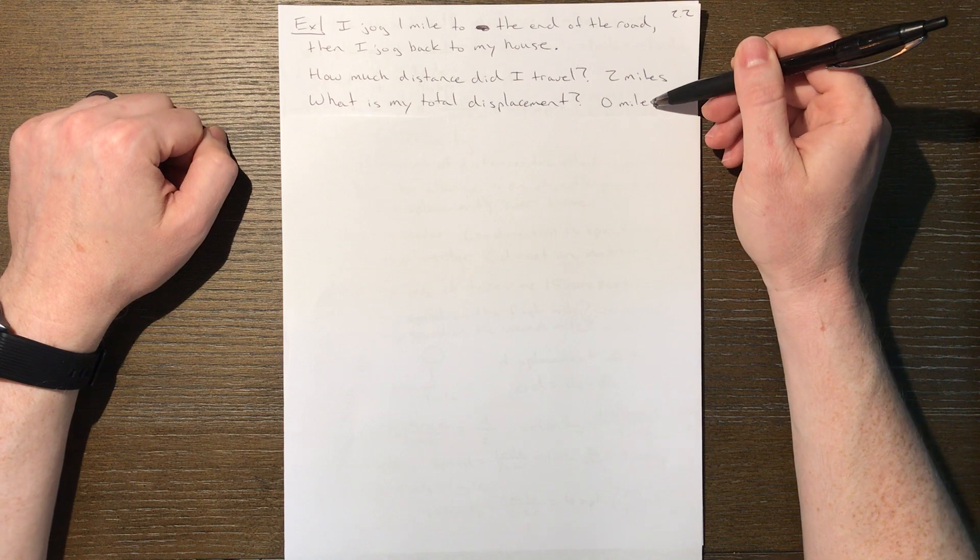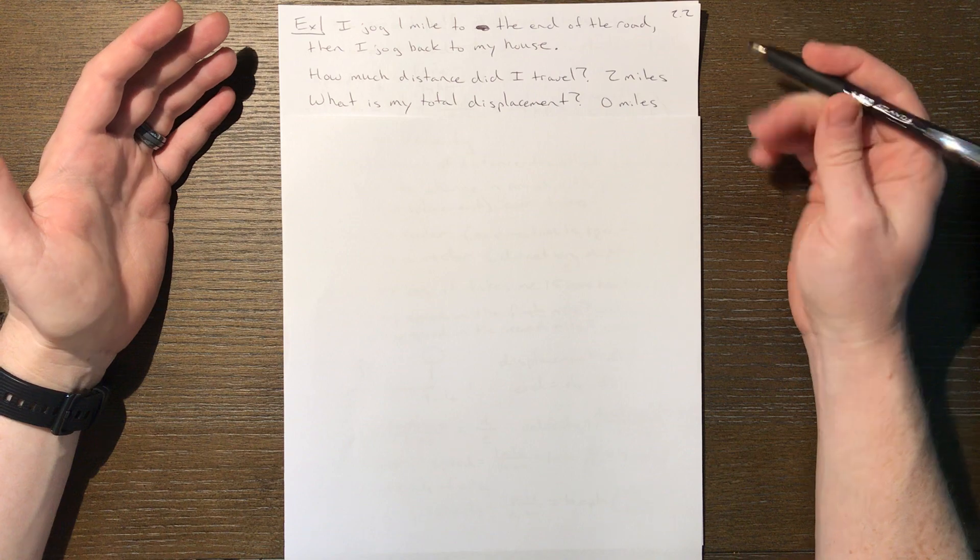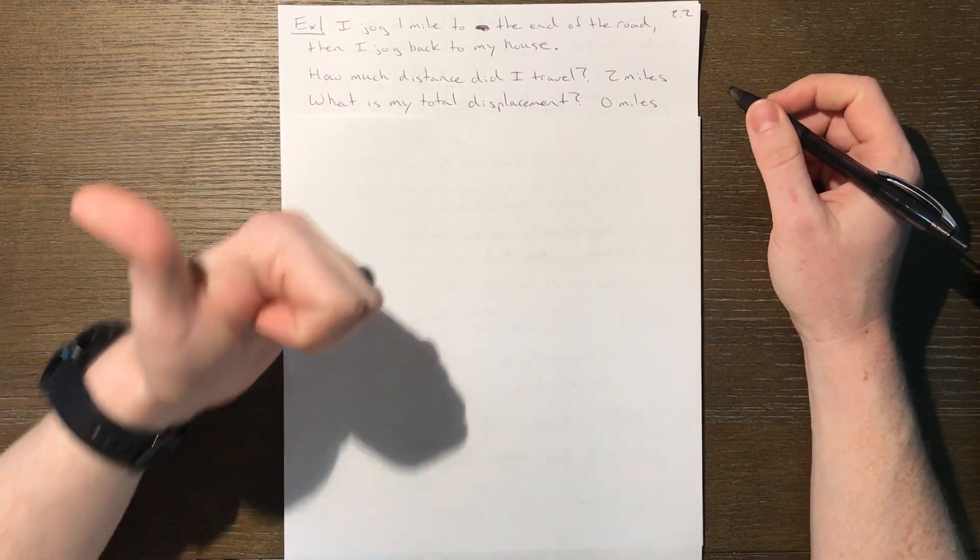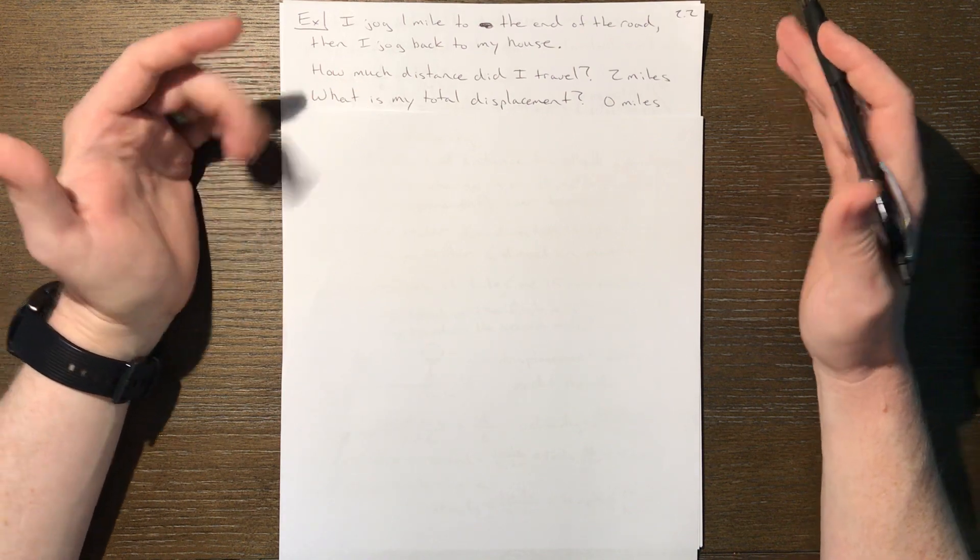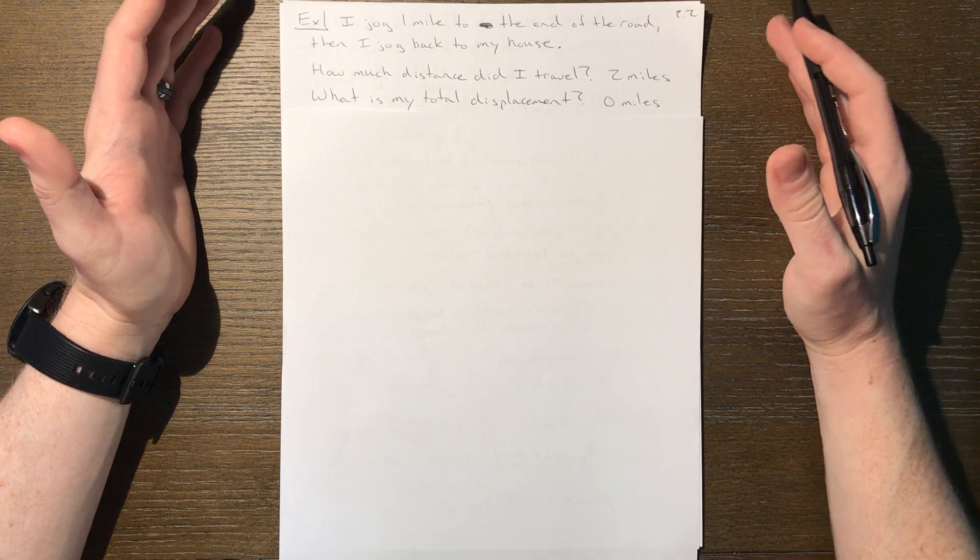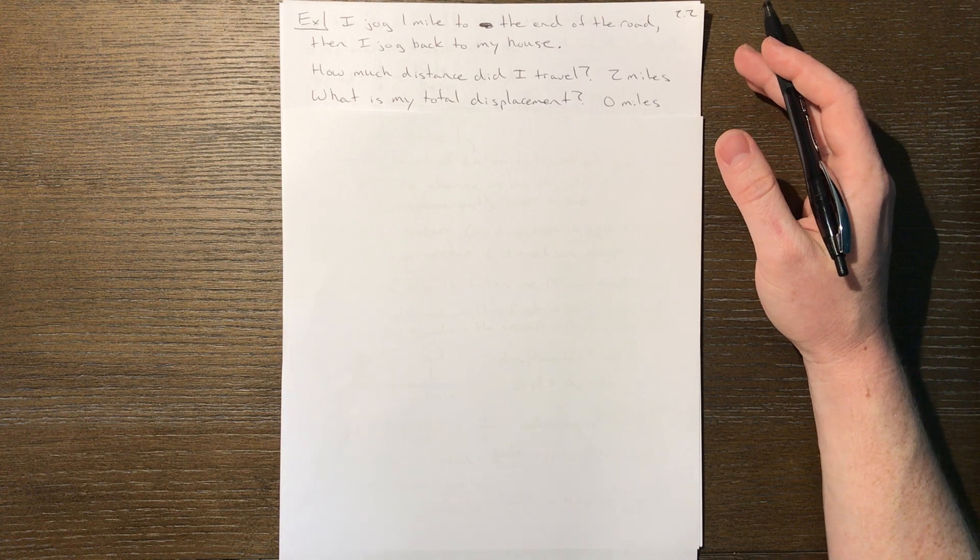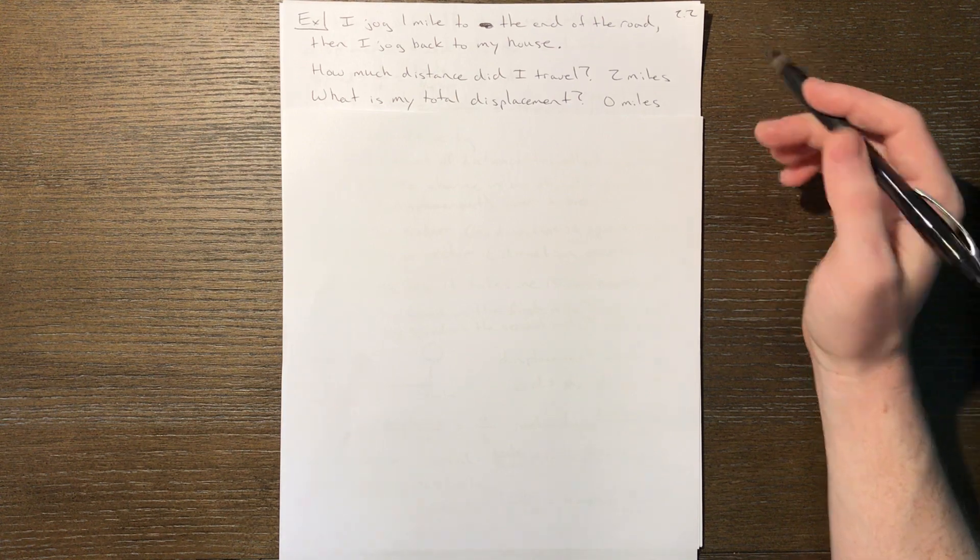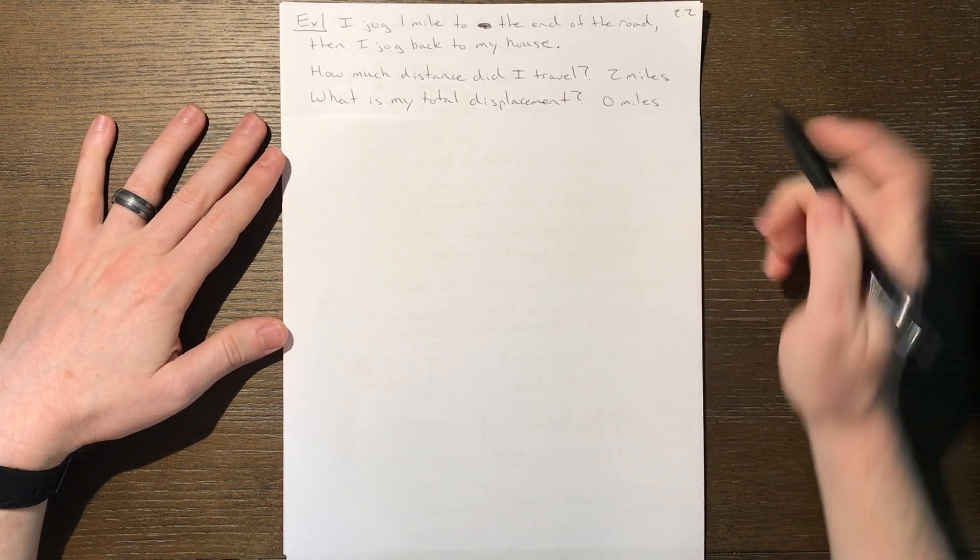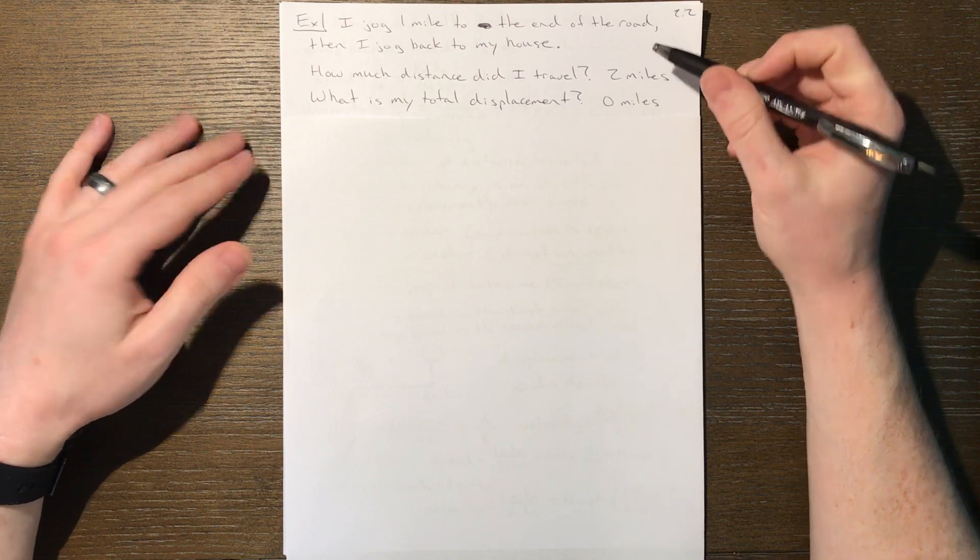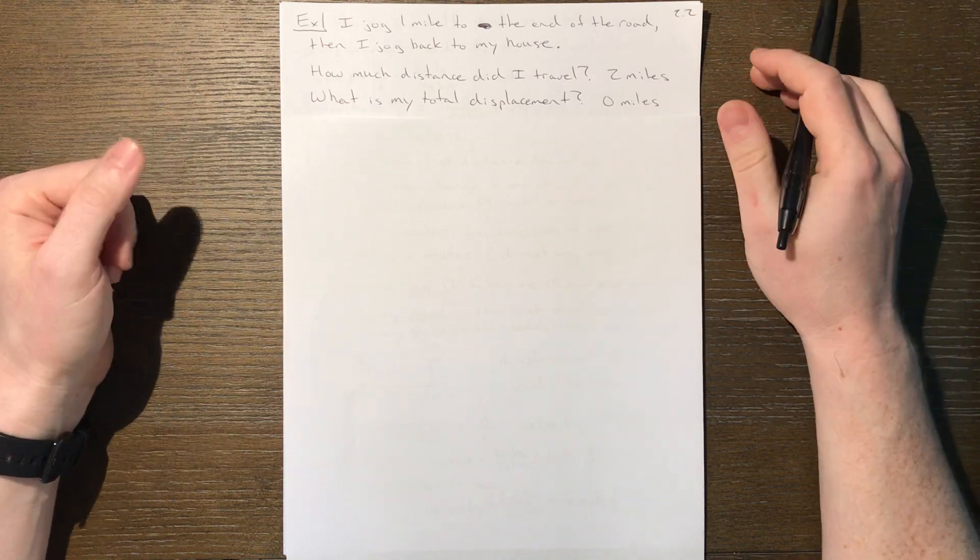But if we ask what is my total displacement, the answer is actually zero miles. If we consider how my position changed, well, if we only look at where I started and where I ended, I started at my house and I ended at my house. If you don't pay attention to the journey, only how it begins and ends, you wouldn't notice any difference other than I'd probably be a little sweaty and tired by the end. But in terms of my position, I'm exactly where I started, which means my position ultimately did not change. And zero is actually a special vector - it doesn't have any direction because obviously you didn't go anywhere. It's called the null vector.